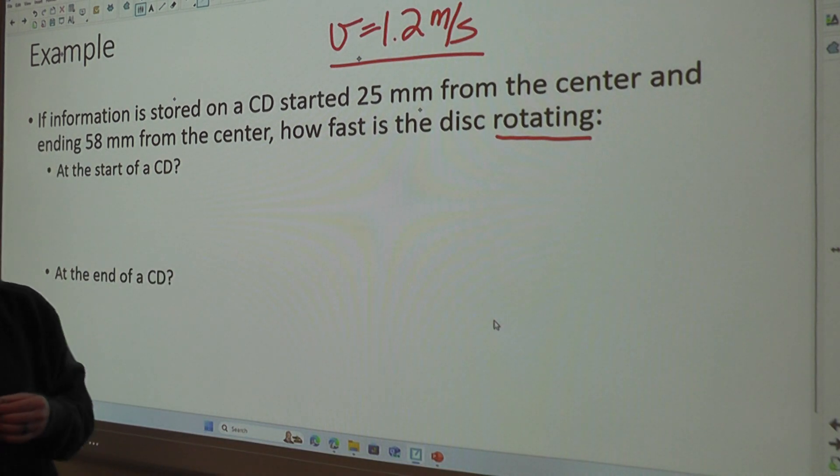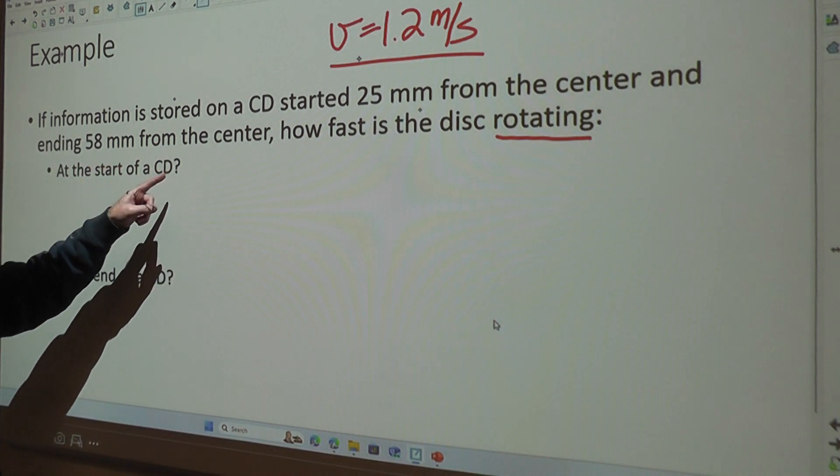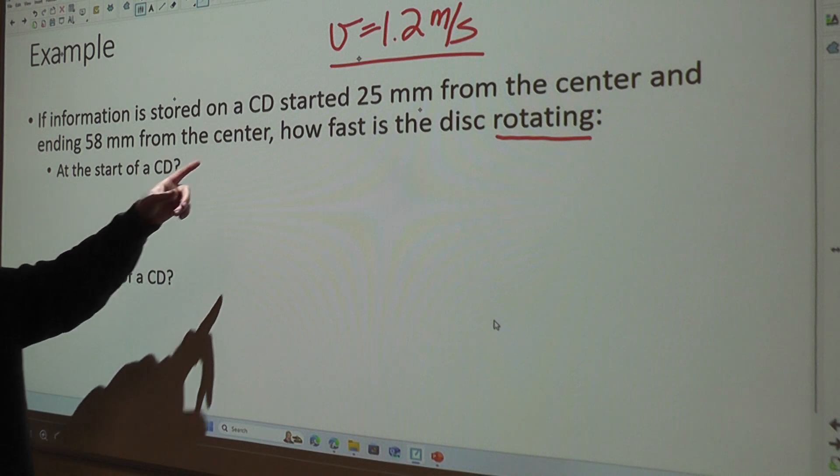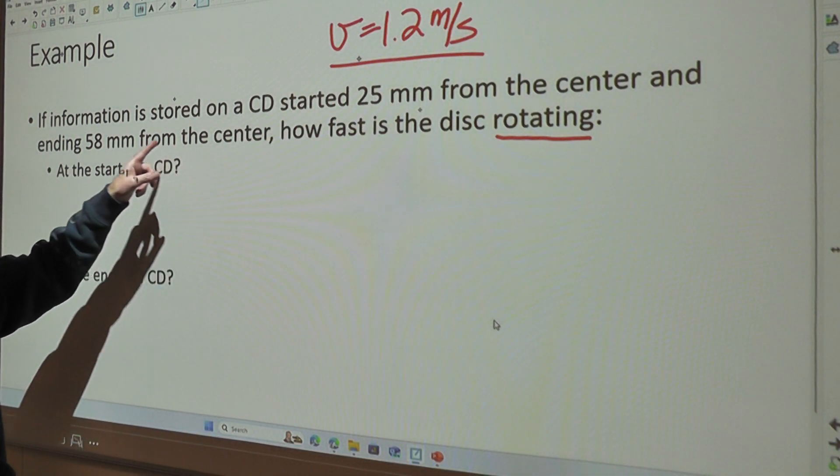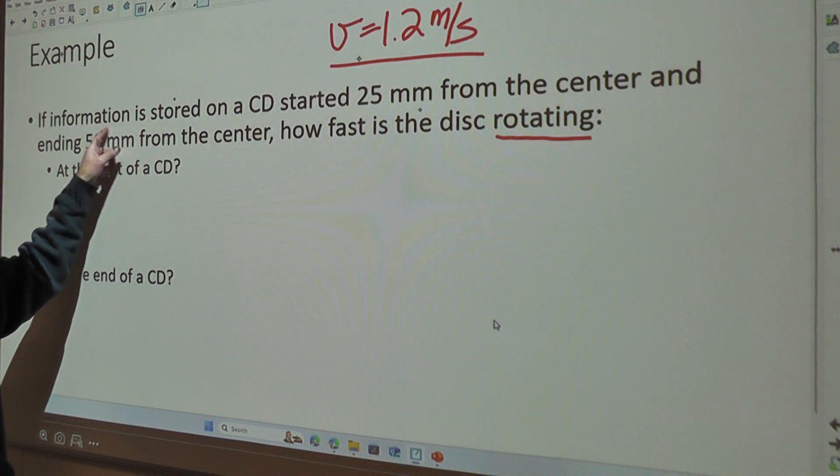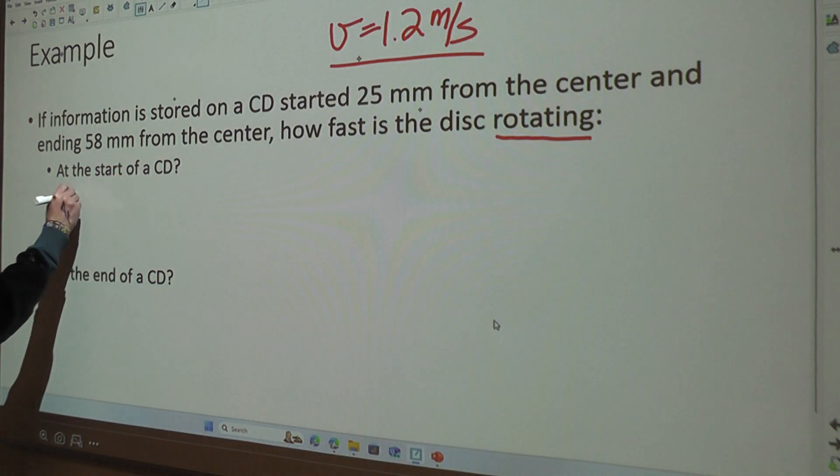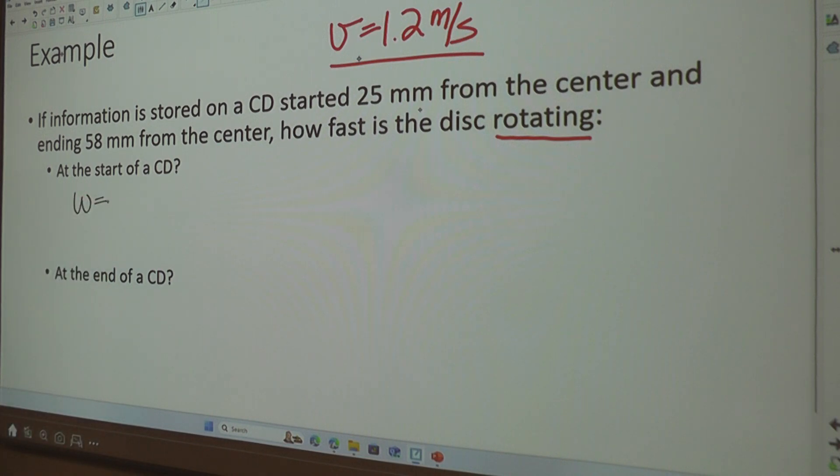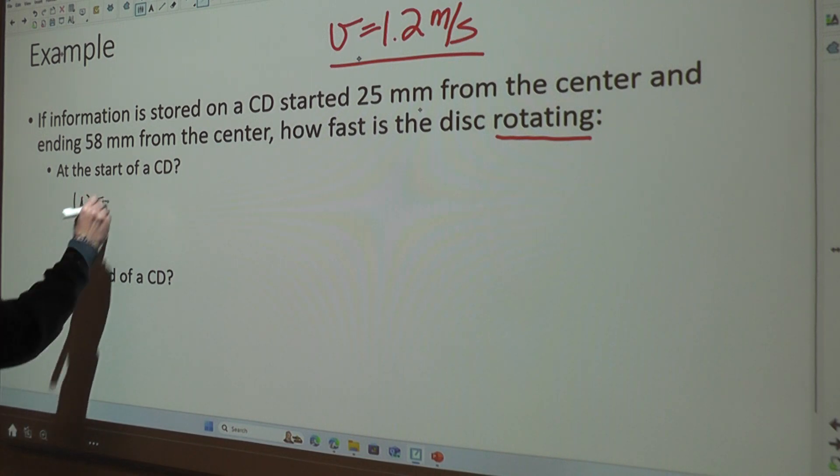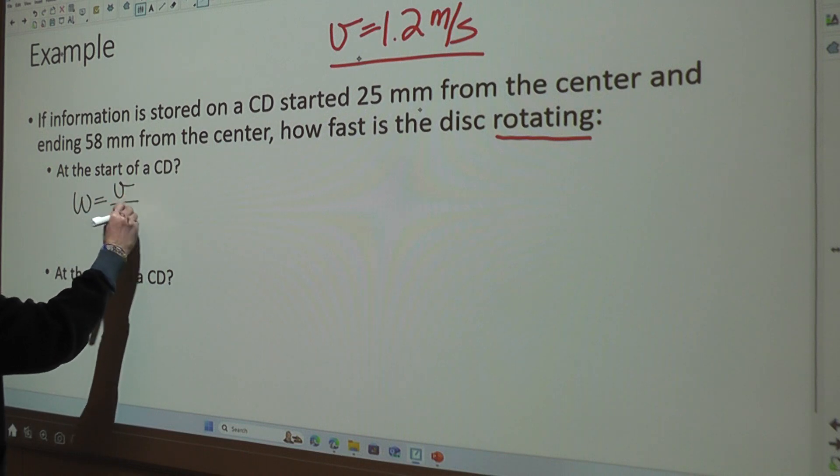All we want to know is how fast is it spinning, rotating, when the laser is this far away from the center, and how fast is it rotating when the laser is this far away from the center? To figure that out, we have a pretty simple relationship, which is that angular velocity is linear velocity divided by r.